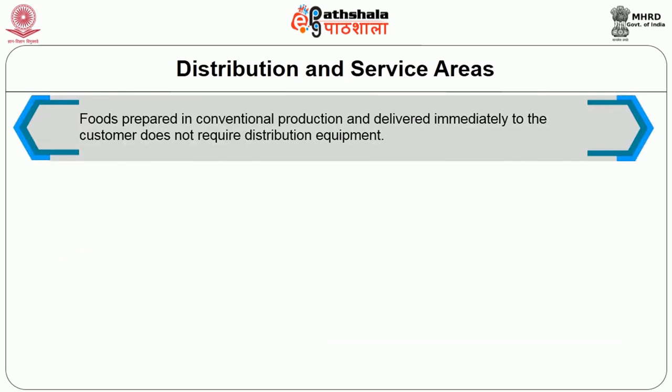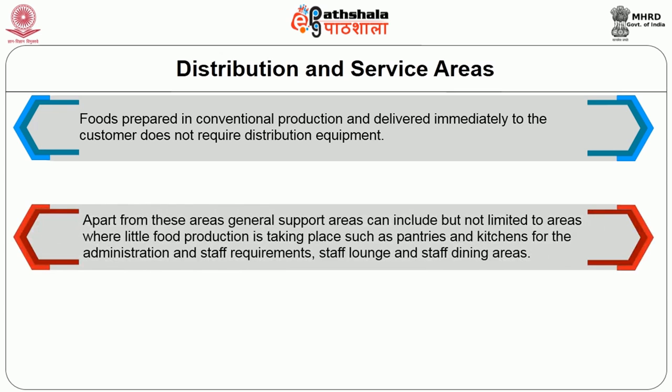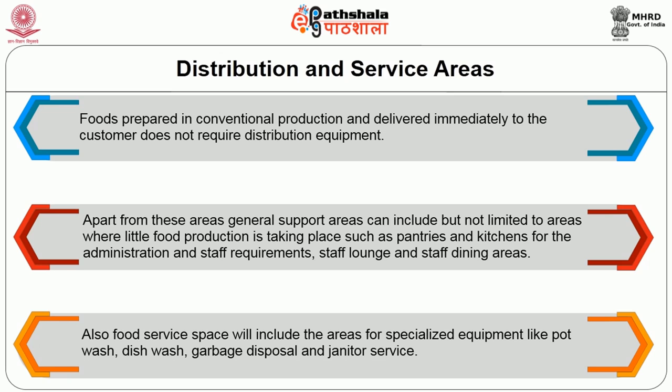Apart from these areas, general support areas can include pantries and kitchens for administration and staff requirements. Food service space will also include areas for specialized equipment like pot wash, dishwash, garbage disposal and janitor service. To conclude, though these facilities might differ from establishment to establishment, a sound and effective planning of space can minimize and prevent accidents and aid in proper utilization of space for the functions in a food service.